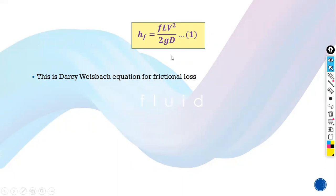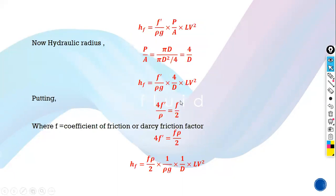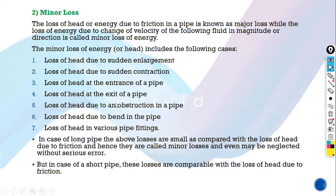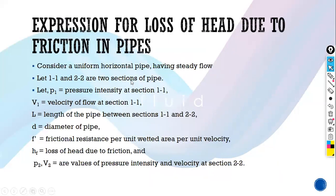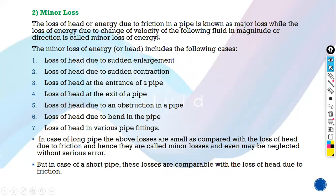This is the most important equation for pipes — it gives the major energy loss in pipes. This is the Darcy-Weisbach equation. Major loss is due to friction, while minor loss is due to change of velocity in magnitude or direction. Minor losses include losses due to sudden enlargement, contraction, entrance, exit, obstruction, bend, and fittings.